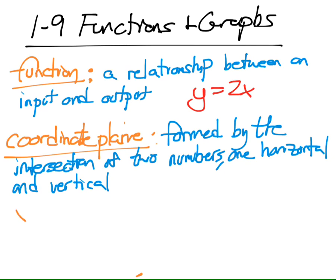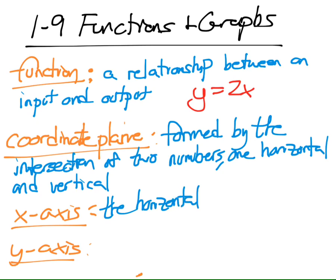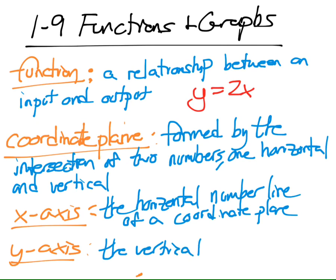And there's two parts of a coordinate plane. One is the x-axis and one is the y-axis. The x-axis is the horizontal number line of a coordinate plane. And the y-axis is the vertical number line of a coordinate plane. So remember, horizontal goes left to right, vertical goes up and down. The y-axis is the one that goes up and down. The x-axis is the one that goes across.